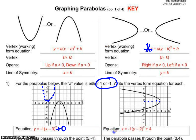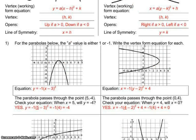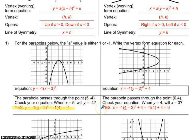Now it also gives you the option to check this. The parabola passes through the point (5, -4), so we're going to check the equation when x is five and see if y equals four. I plugged it in and got a true statement, so my answer is correct. Then we did the same for the other one — it passes through (0, 4) — and again it is correct. I want you to do the two at the bottom just like you did the two at the top.